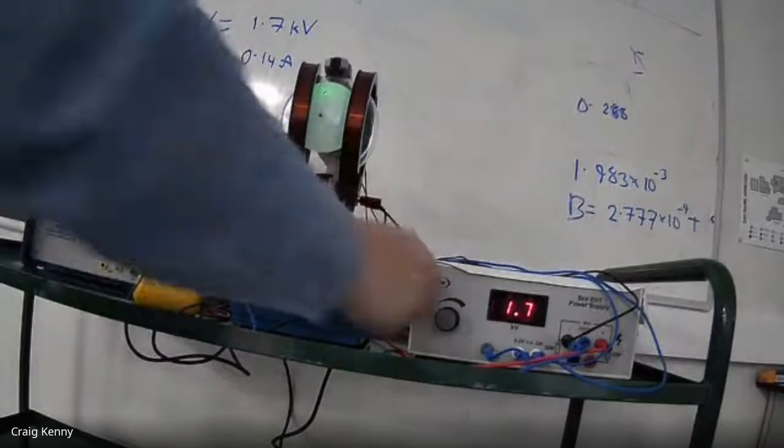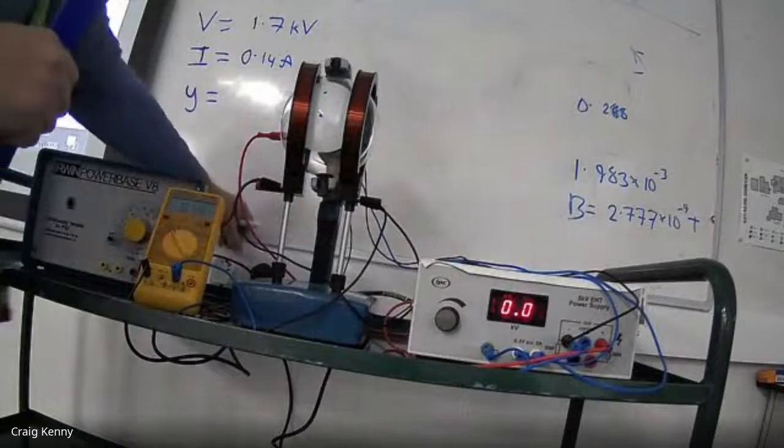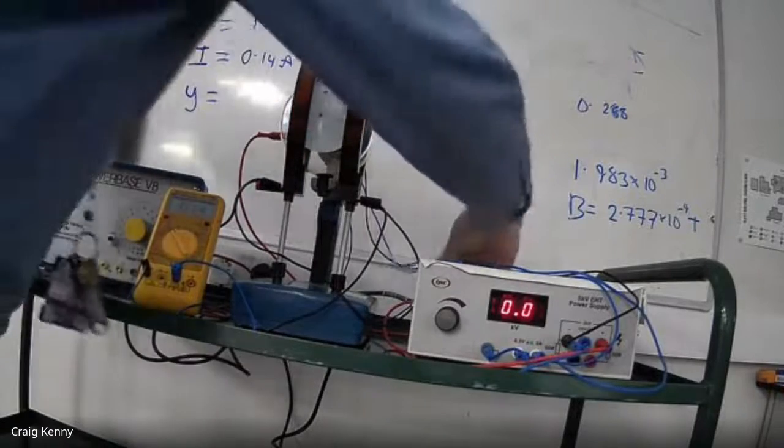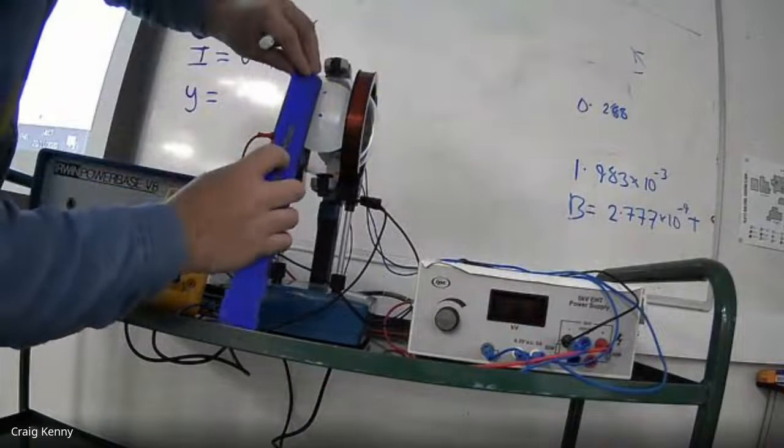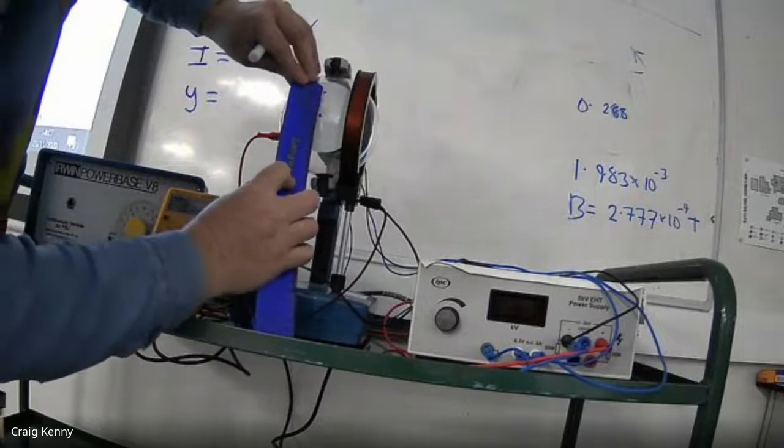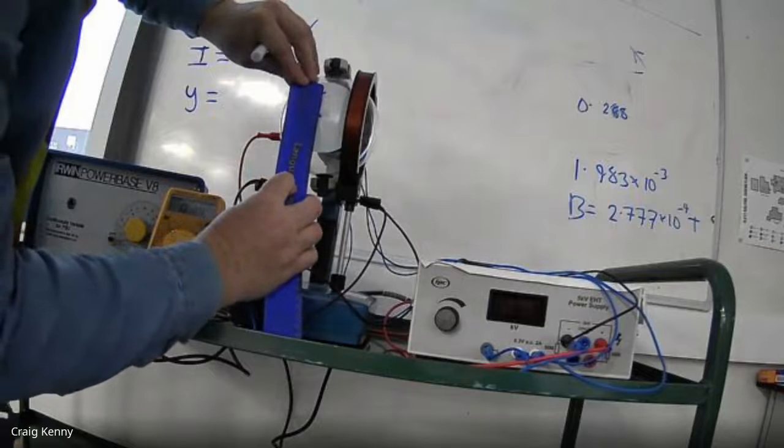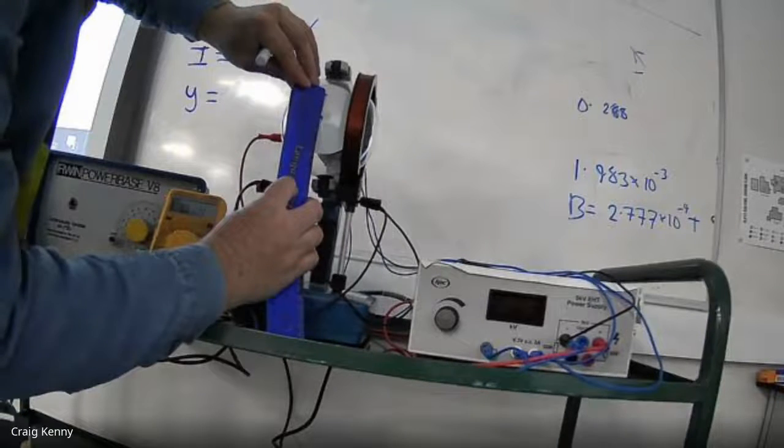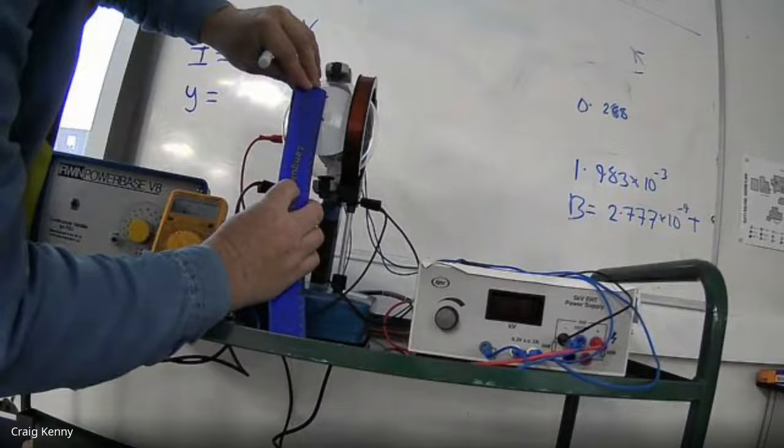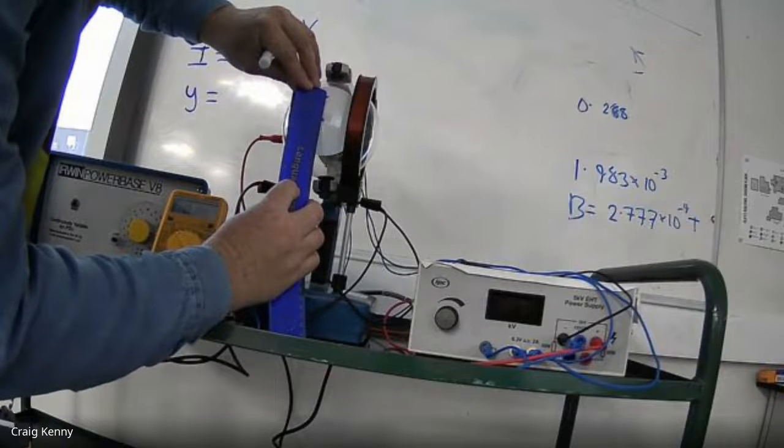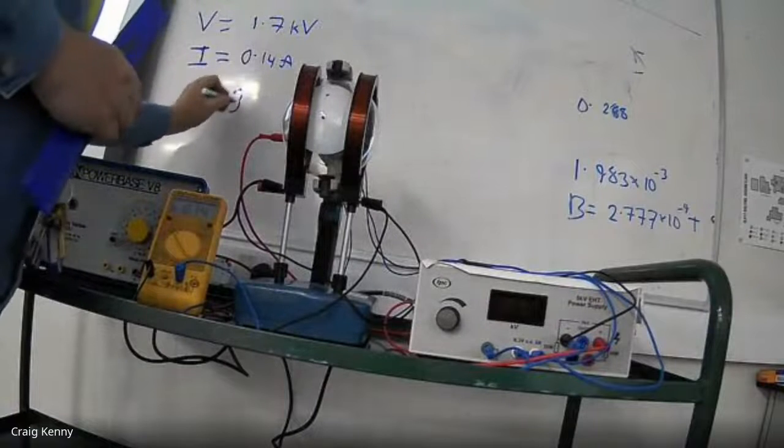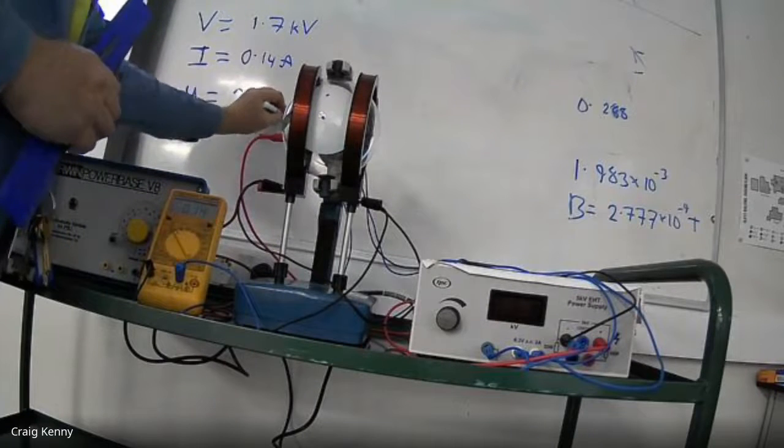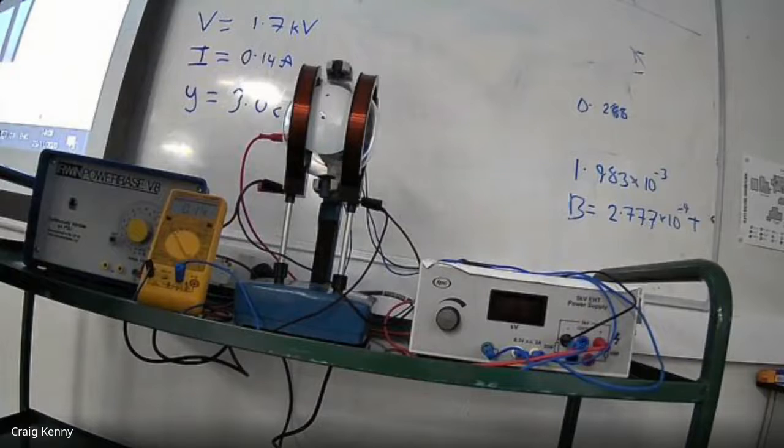Before I do that, let's turn off the accelerating voltage and take this measurement now. So I can see on this ruler, I have a deflection of 3.0 centimeters. 3.0 centimeters is my deflection.